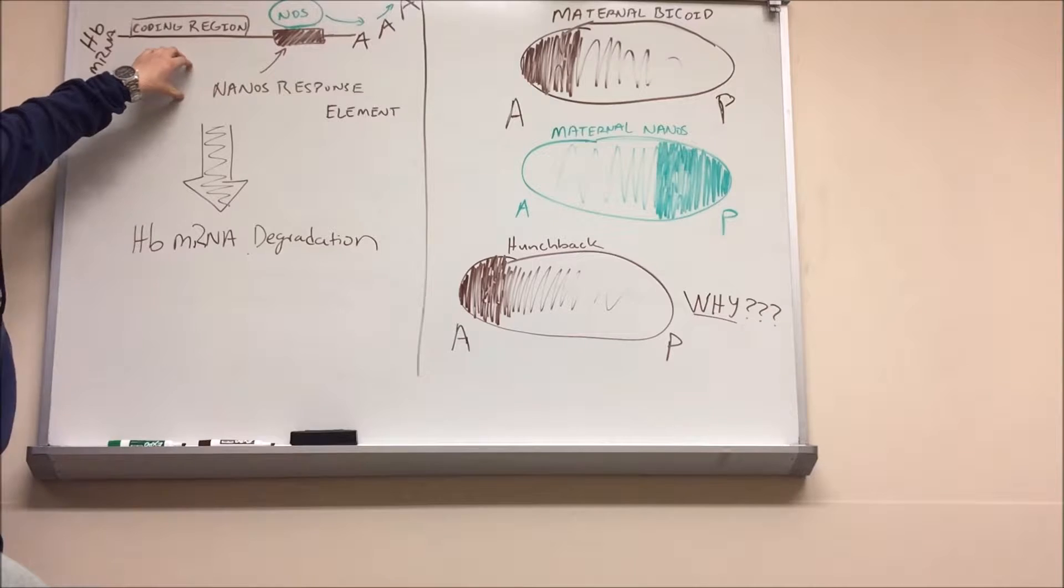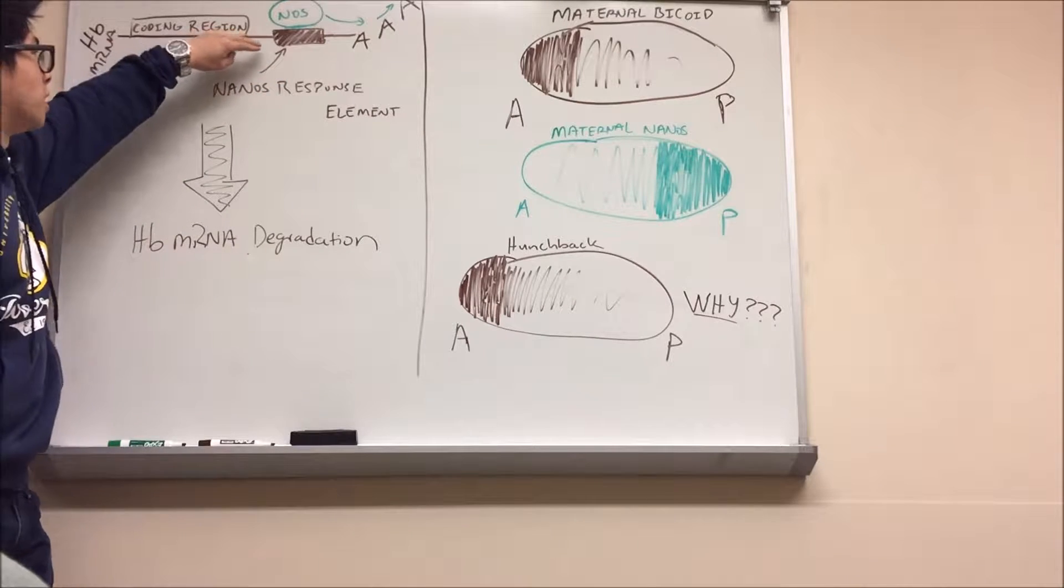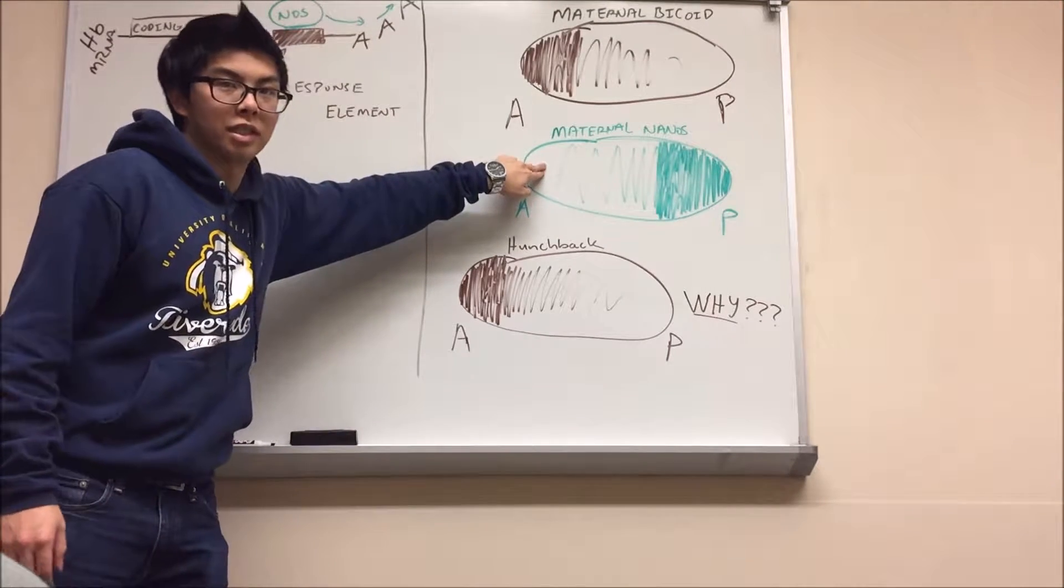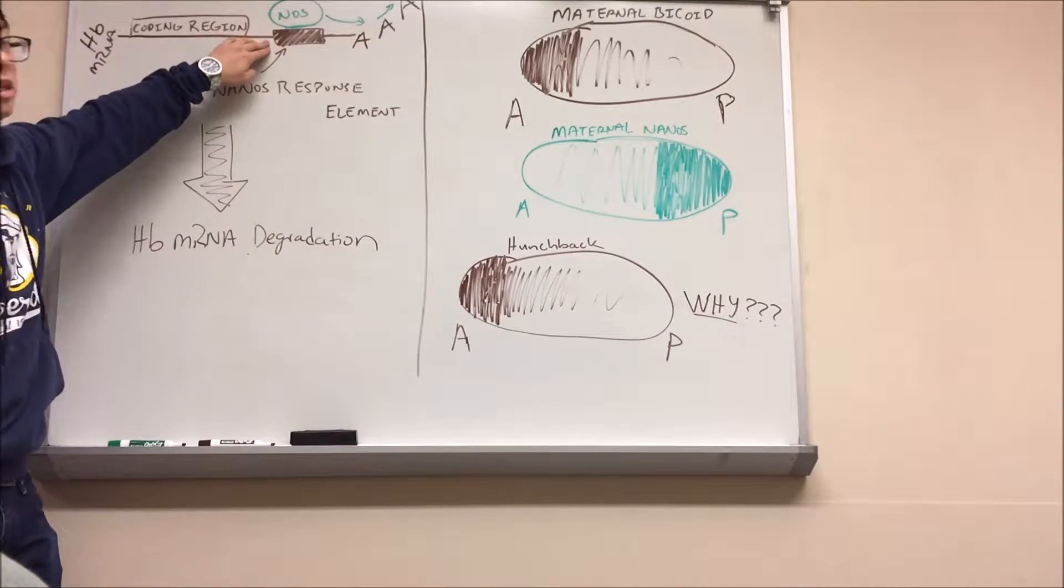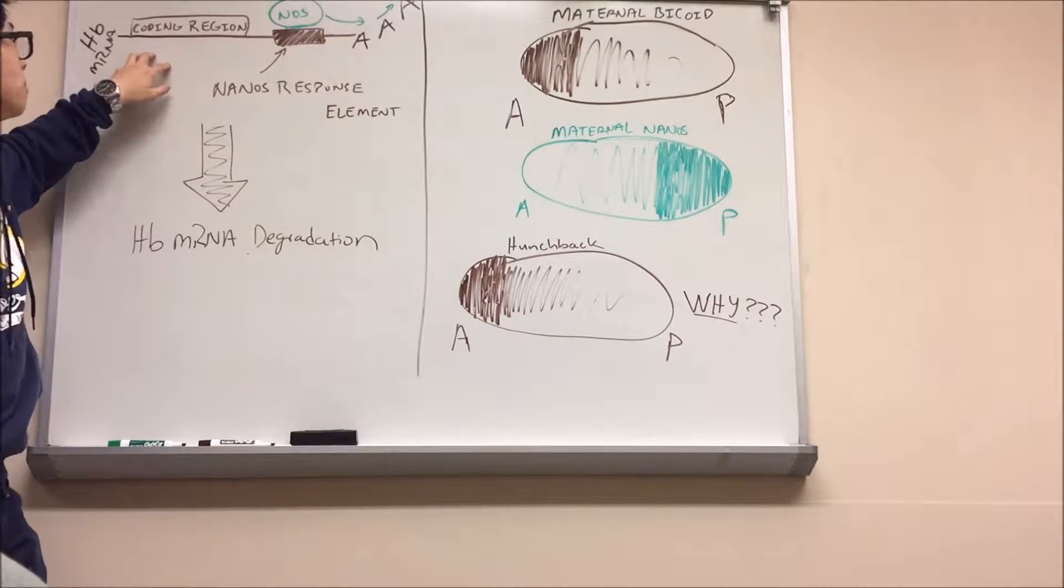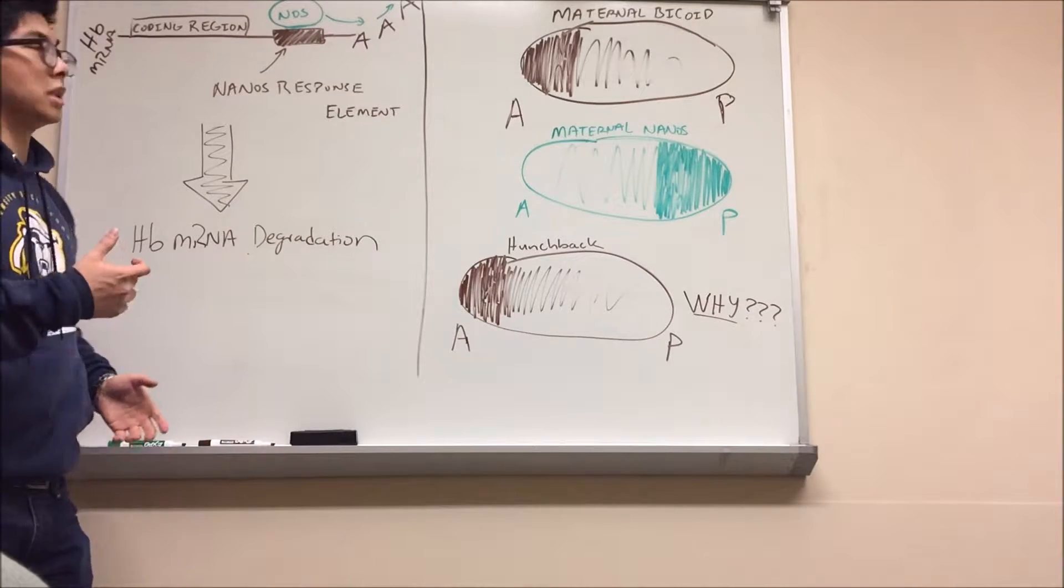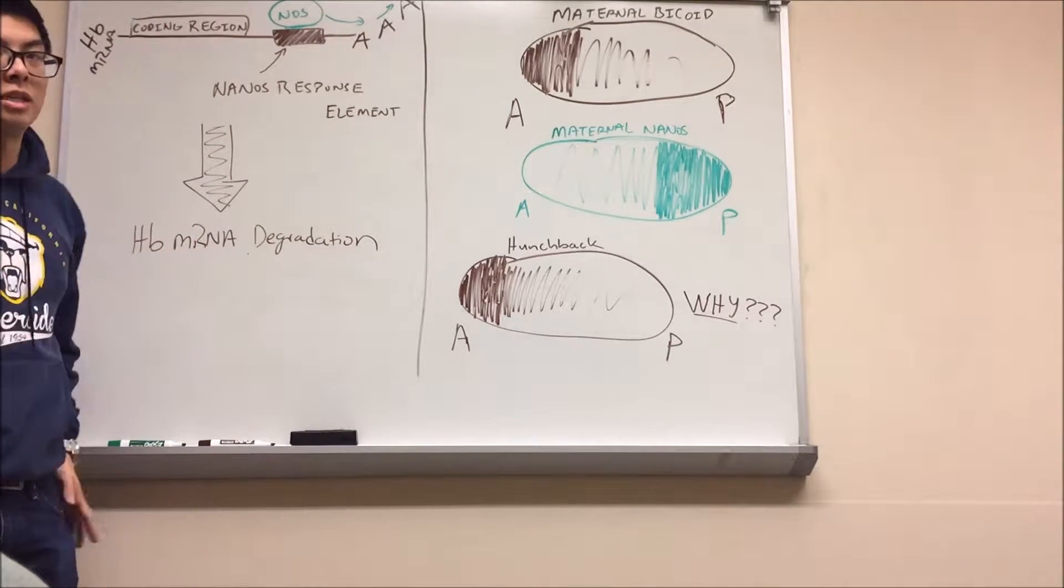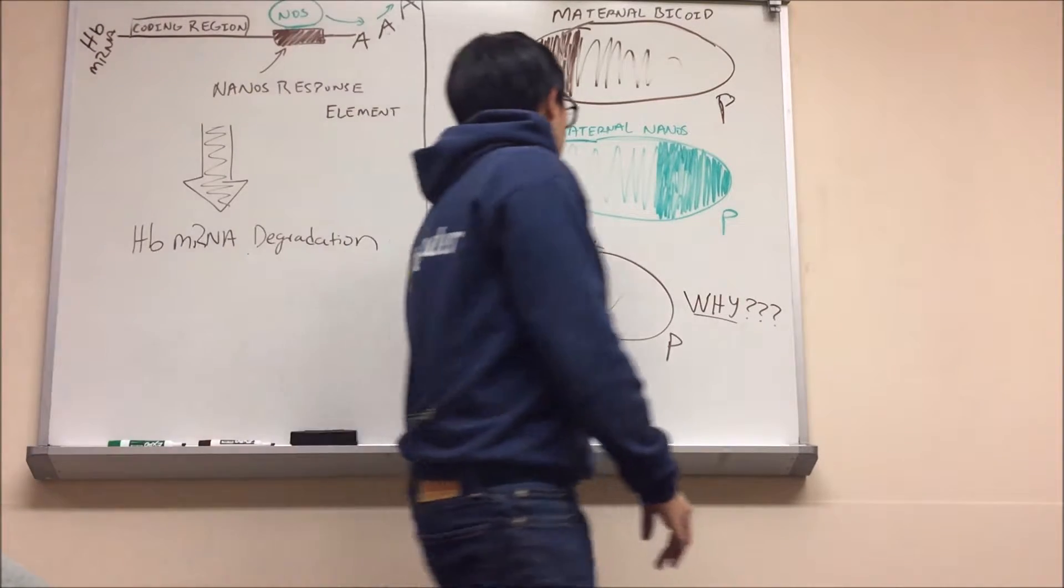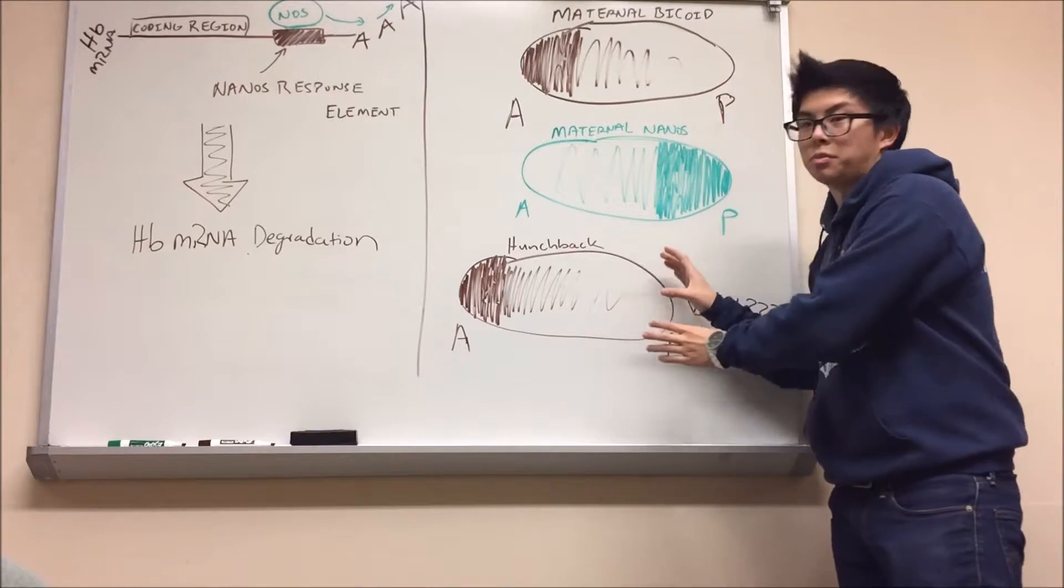You have this Hunchback mRNA and this coding region right here. Towards the 3' end of this mRNA, you have a Nanos response element. This Nanos response element is where when Nanos is translated into its protein, Nanos binds right here and upon binding, it degrades the polyadenylated tail of Hunchback mRNA. When you degrade this tail, you're preventing translation from occurring and you're also unable to keep this mRNA structure completely stable. Ultimately, this results in Hunchback mRNA degradation.